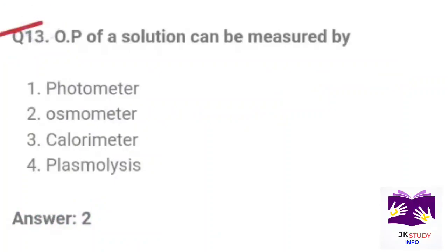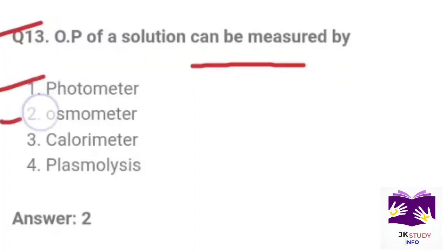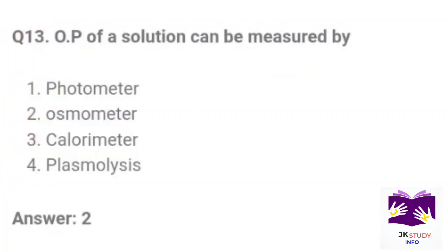Next question: The osmotic potential (OP) of a solution can be measured by? Option 1: photometer. Option 2: osmometer. Option 3: calorimeter. Option 4: plasmolysis. Correct option is Part 2: osmometer.